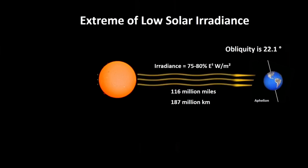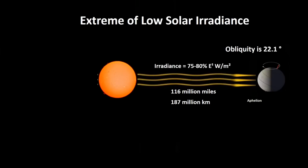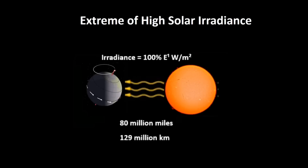Earlier we looked at the example of extreme low solar irradiance, where the aphelion is at its greatest distance and the axial tilt is closest to the vertical. When we factor in precession, there will be further variations in the seasons and a further extreme as the cycles of precession and obliquity coincide — one extreme being where precession tilts the Earth even further from the Sun, another being where precession tilts the Earth closer to the Sun.